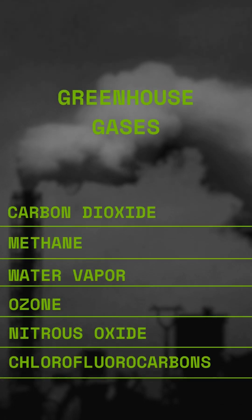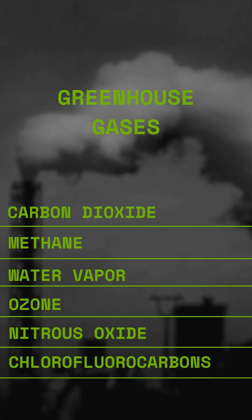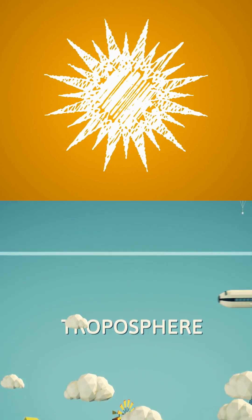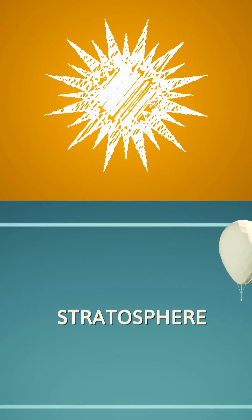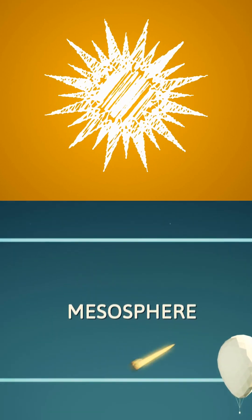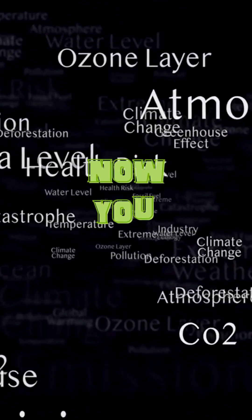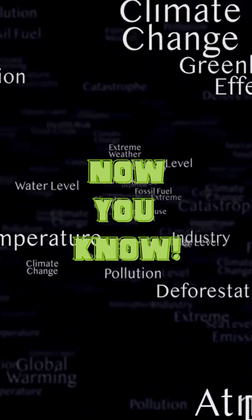Greenhouse gases are gases in Earth's atmosphere that trap heat. They let the sun pass through, but they prevent the sun's heat from leaving the atmosphere.